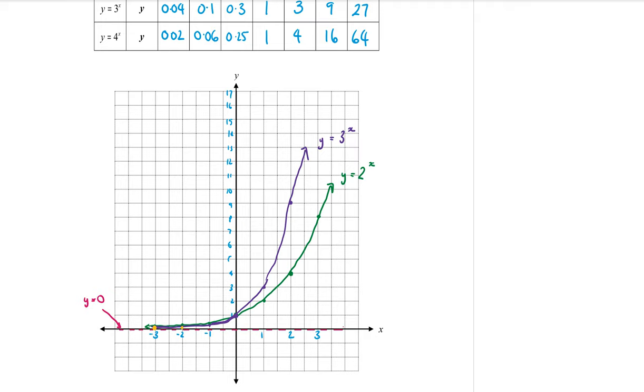So at minus 3 it is even smaller than both the graphs that we had. At minus 2 it's smaller. At minus 1, 0.25. At 0 it's going through the 1 again. When x is 1, the y value is 4. When x is 2, y is 16. And x is 3, y is off the chart. We can't put 64 on our graph.